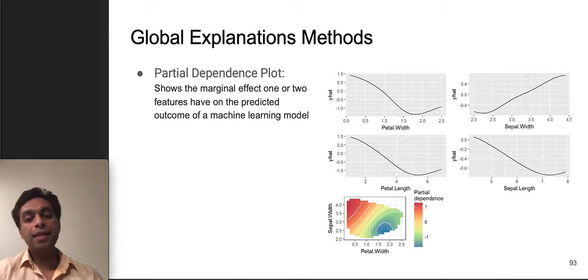Another technique which has been looked at in literature around global level feature importance is that of partial dependence plots. What it does is it basically shows the marginal effect of one or two features on the predicted outcome of the model.